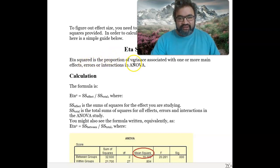Eta squared is the proportion of variance associated with one or more main effects, errors, or interactions in ANOVA. As you can see, the proportion of the effect is calculated from the total.